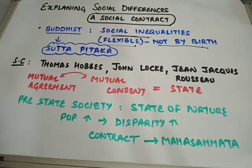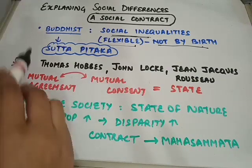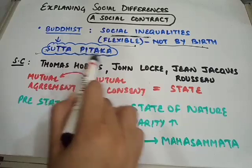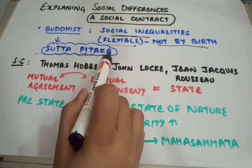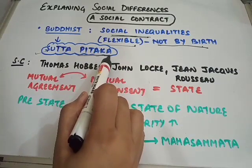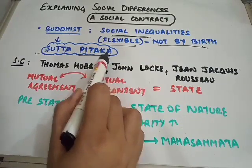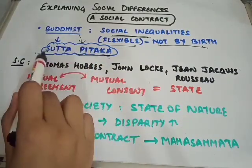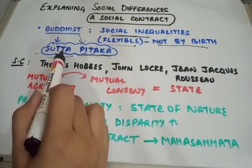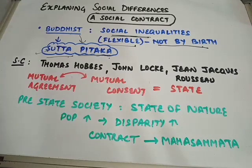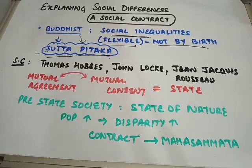That is, people's social position in society is not determined by birth. We learn about this idea from a famous Buddhist text, the Sut Pitak. The Pitaks are on an equal footing as the Vedas — in Hindu mythology we have the Vedas, and in Buddhist mythology we have the Pitaks. Sut Pitak is one of the most important Pitaks, and it discusses a social contract.